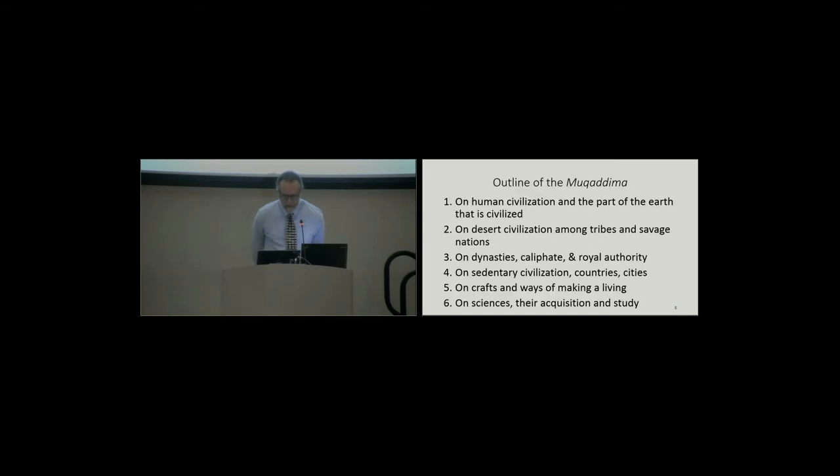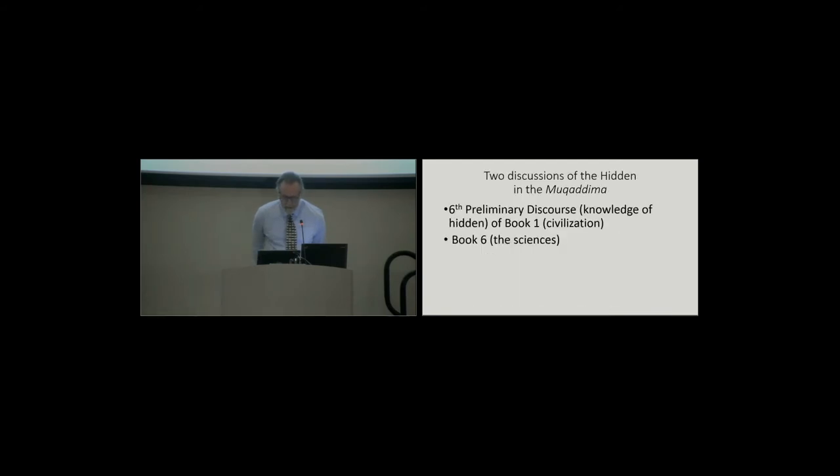Now, the Muqaddimah is a very ambitious work, and I'm just giving you the outline so you can see how big it is. I'm going to refer to a couple of sections from chapter 1, or book 1, and book 6. From book 1, he has six preliminary discourses, and the last one is about the knowledge of the hidden before he gets into the heart of the book on civilization. Then, in the sixth book, which is a survey of the sciences, he talks about what he calls the traditional and the intellectual sciences, and we'll see where he fits in a few of the occult sciences into that section.